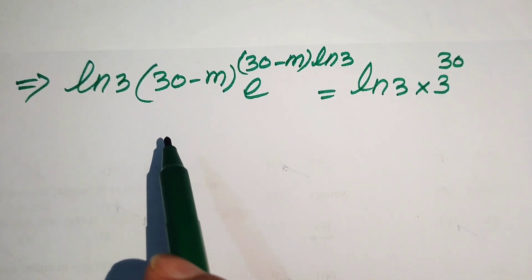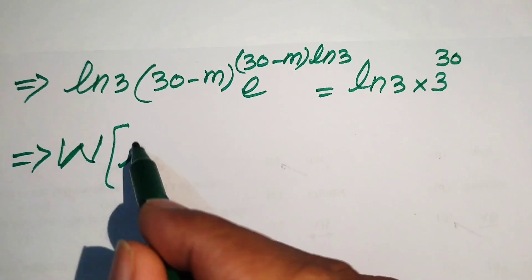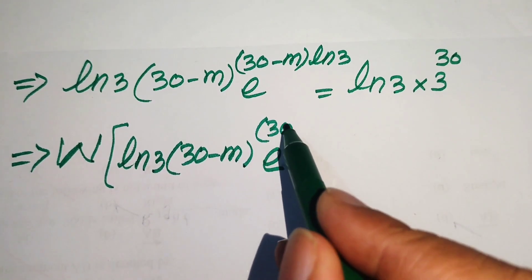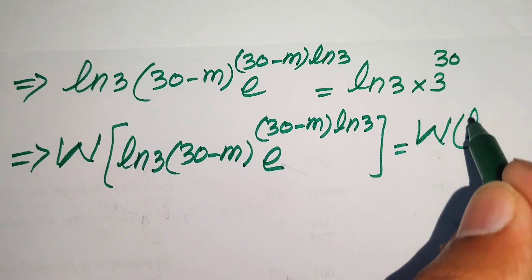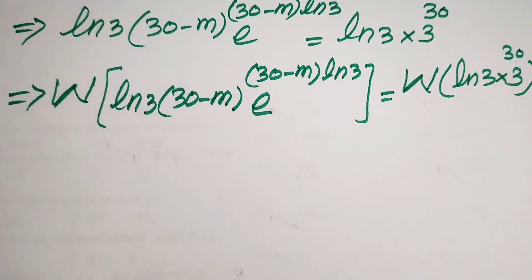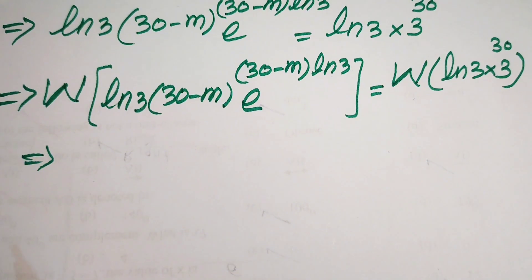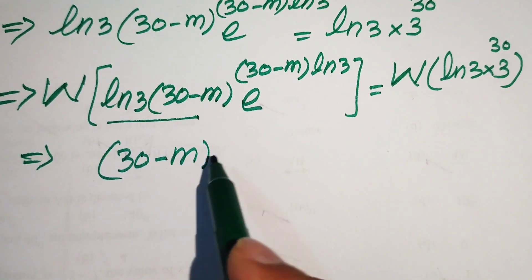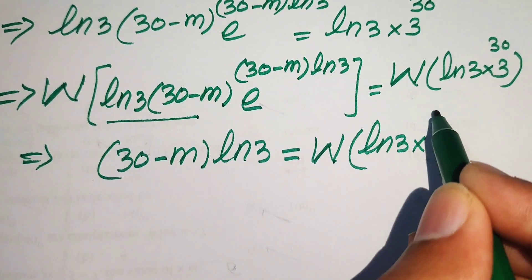When we multiply both sides by log 3, we get: log 3 times 30 minus m times e to the power of 30 minus m times log 3 equals log 3 times 3 to the power of 30. We have now satisfied all the conditions of the Lambert W function, so we apply W to both sides. The output of the left hand side is the exponent of e, which is 30 minus m times log 3, equals W of log 3 times 3 to the power of 30.